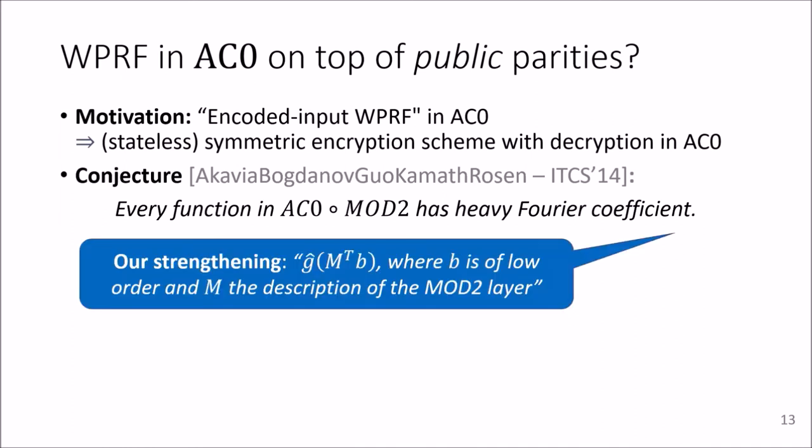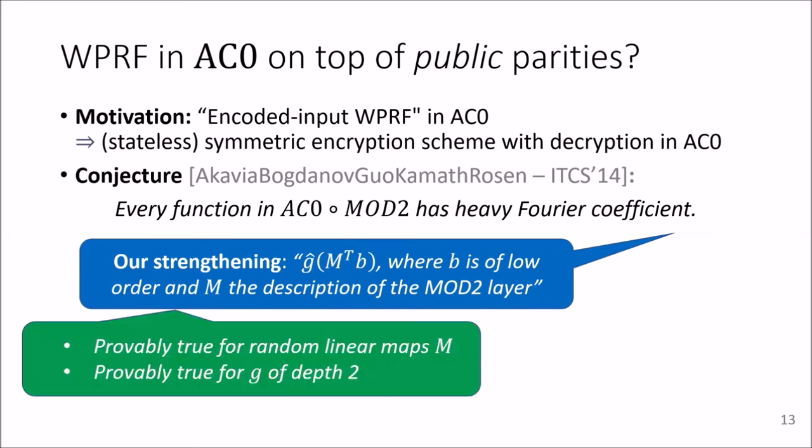We strengthened their conjecture by saying that this heavy Fourier coefficient stems from some low-order Fourier coefficient by applying the transpose of the linear mapping describing the mod 2 layer. Similar to Akavia et al. for their original conjecture, we showed that this is provably true if M is a random map independently of the AC0 circuit G and if G is a DNF or CNF independently of the map M.